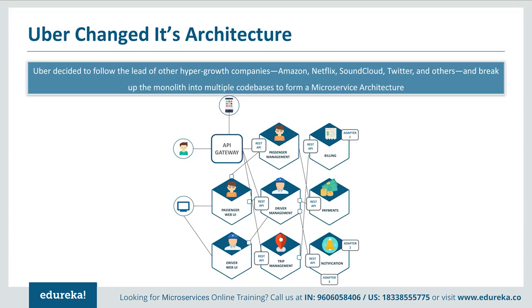To avoid such challenges, Uber decided to follow the lead of hypergrowth companies like Amazon, Netflix, SoundCloud, and Twitter, and broke down its monolithic framework into multiple code bases to form a microservice architecture. In the new architecture, the key change is the introduction of an API Gateway which connected all the drivers with the passengers. From the API Gateway, all the internal points were connected — such as passenger management, trip management, driver management, and so on. Anybody who connects to the API Gateway gets automatically connected to all the microservices. Another change is the introduction of individual separate deployable units, meaning any unit can be deployed without disturbing the others.